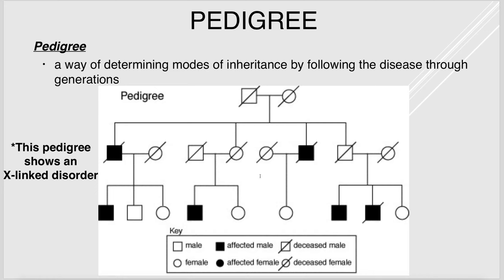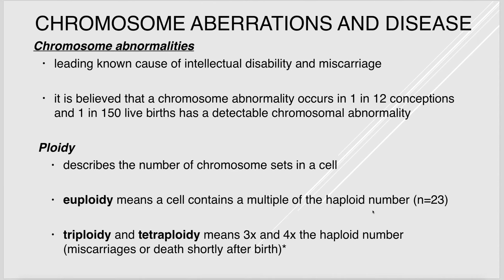A pedigree is a way to determine modes of inheritance by tracking how a disease progresses through generations. Chromosome abnormalities are the leading cause of intellectual disability and miscarriage, occurring in 1 in 12 conceptions. Most don't go to term, and about 1 in 150 live births will have a chromosome abnormality.